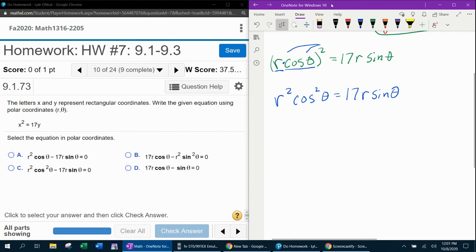So let me come over here to what I've done so far. And let's make that equal to zero by bringing the 17 r sine theta to the other side. And remember, if you bring something across the equal sign, it makes it change sign. So that'll become minus 17 r sine theta, now equal to zero.